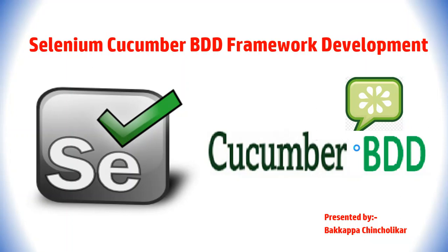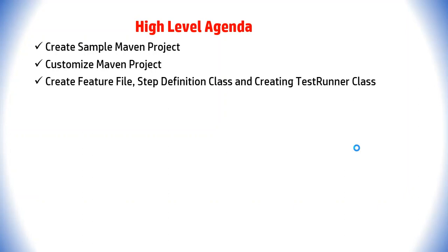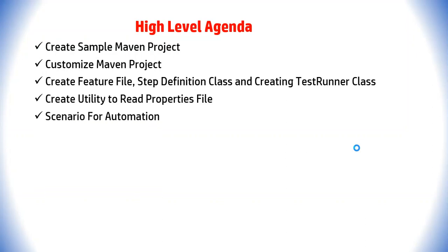Hi guys, this is Baka Pajan Chulikar. In today's Selenium tutorial, we will discuss how to develop a Selenium Cucumber BDD framework. Let us jump to the high-level agenda. First, we will create a sample Maven project, then customize it, then discuss how to create feature files, step definition files, and a test runner class. Finally, we will create one utility method that reads the properties file like URL and file path. We will discuss what scenario we are going to automate and then show a sample demo.